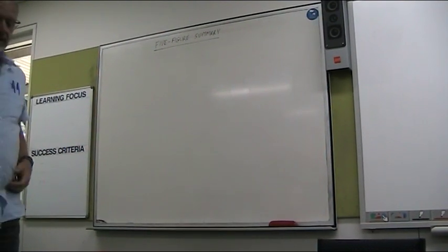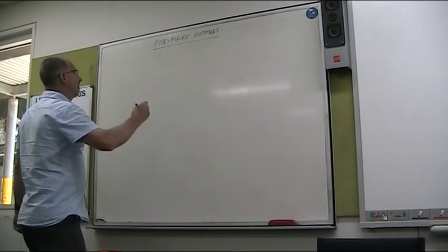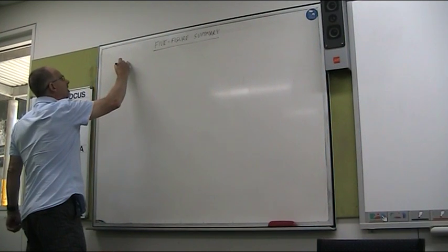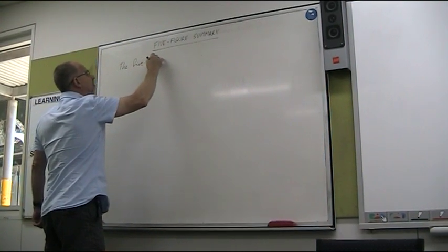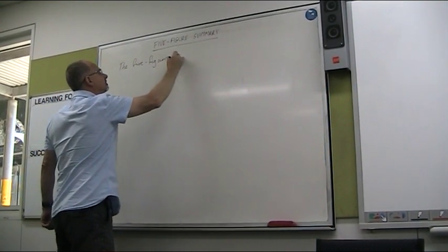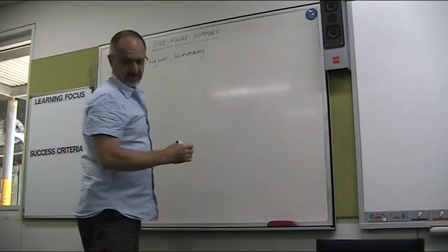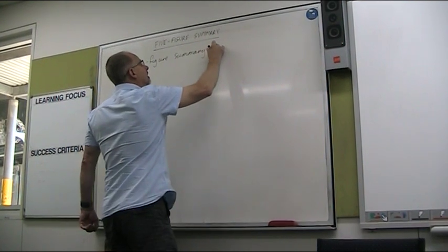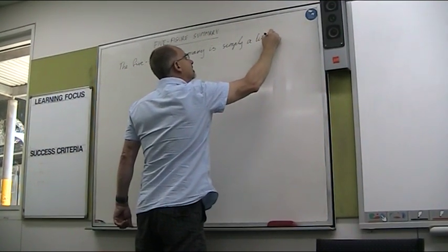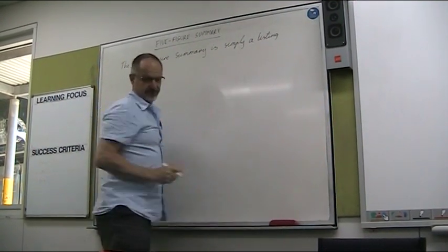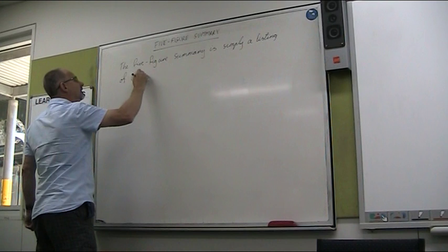Alright, so a reminder of the five-figure summary. The five-figure summary lists some of the things we've already looked at. So it's a listing of the following significant things in order.